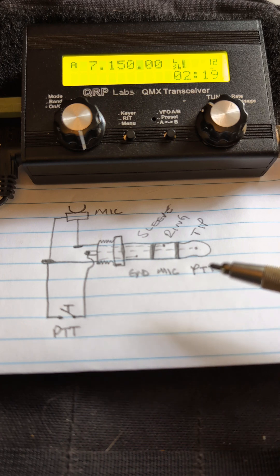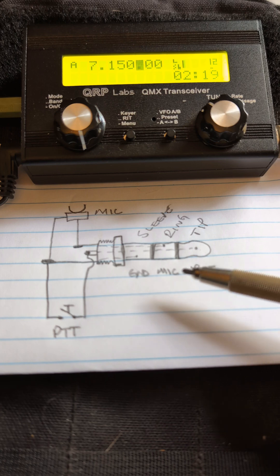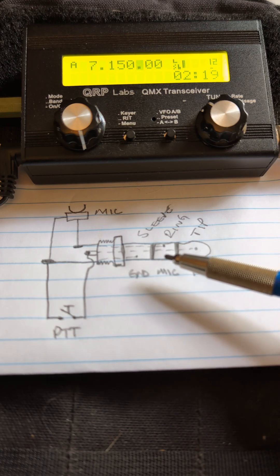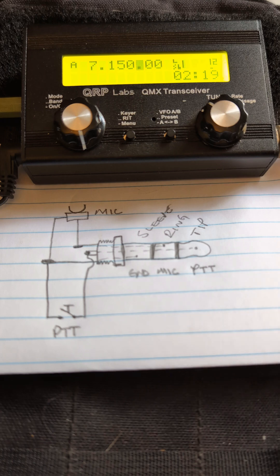So your push to talk needs to be going to the tip and between tip and ground, and your microphone element needs to be wired between the mic and ground. It's really that simple. Just about any electret microphone should get you on the air.